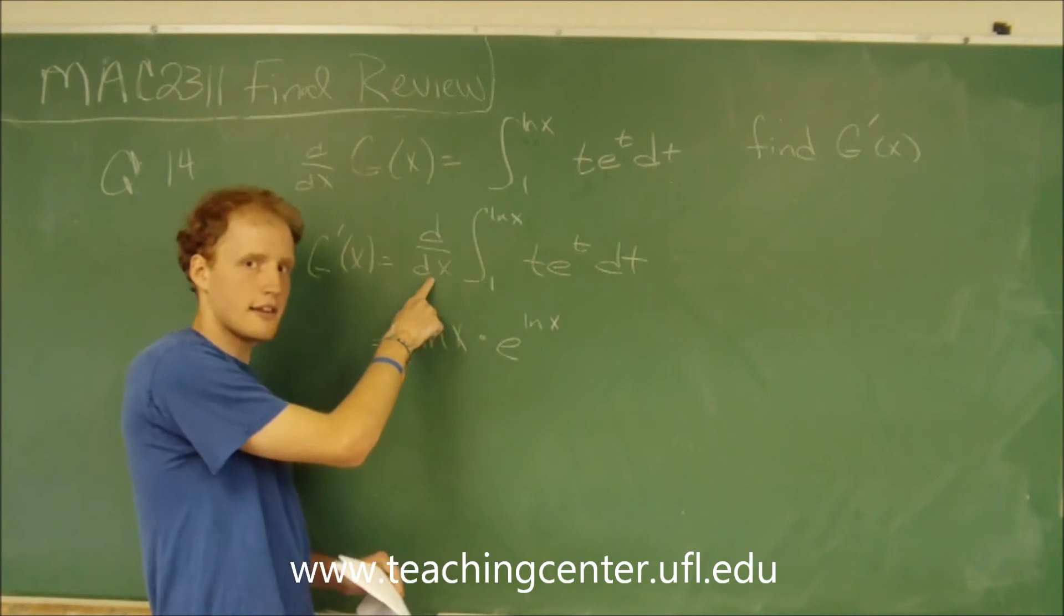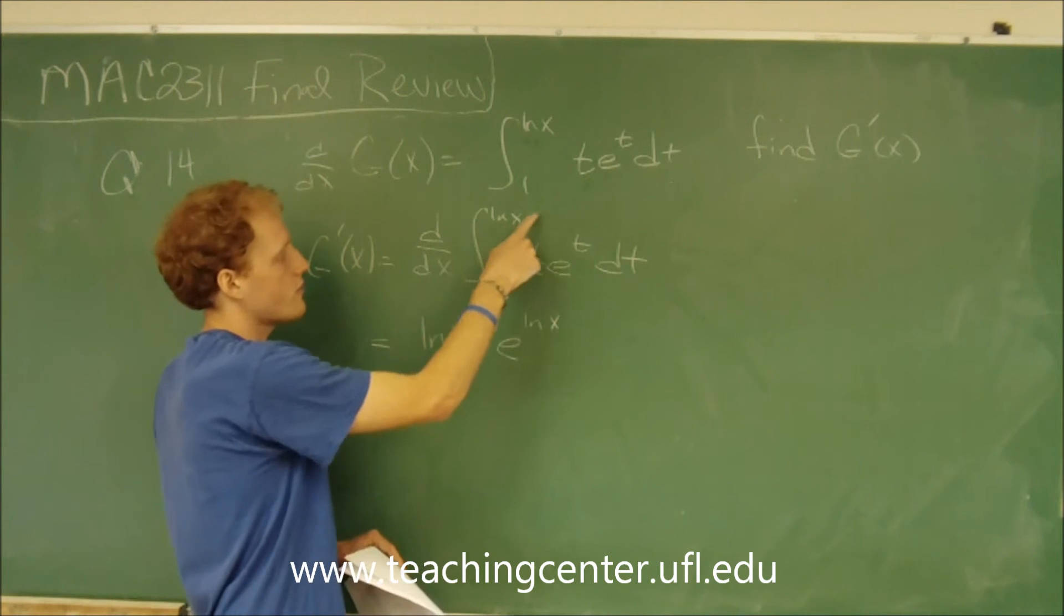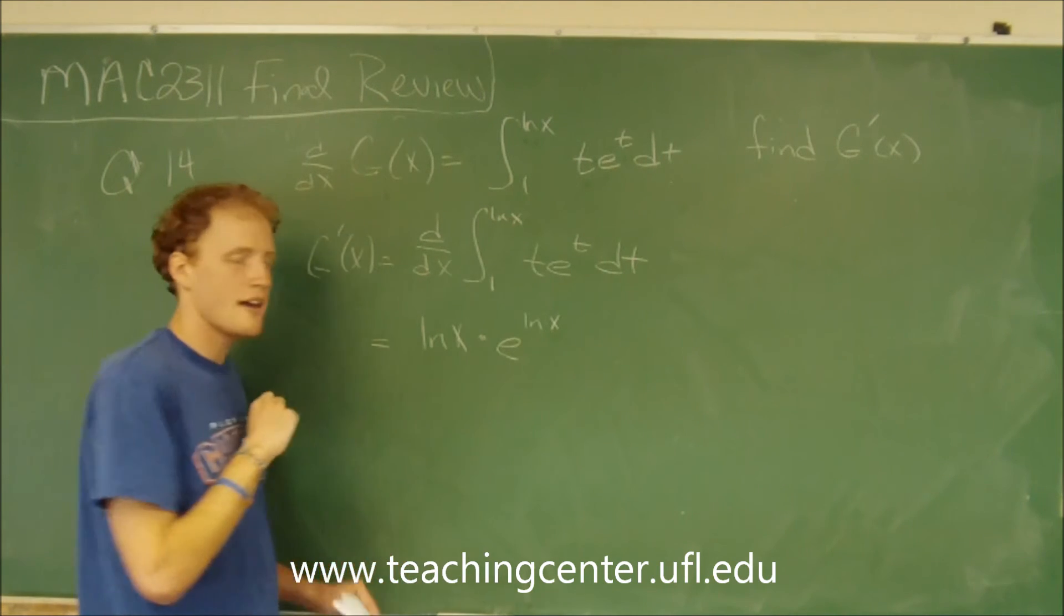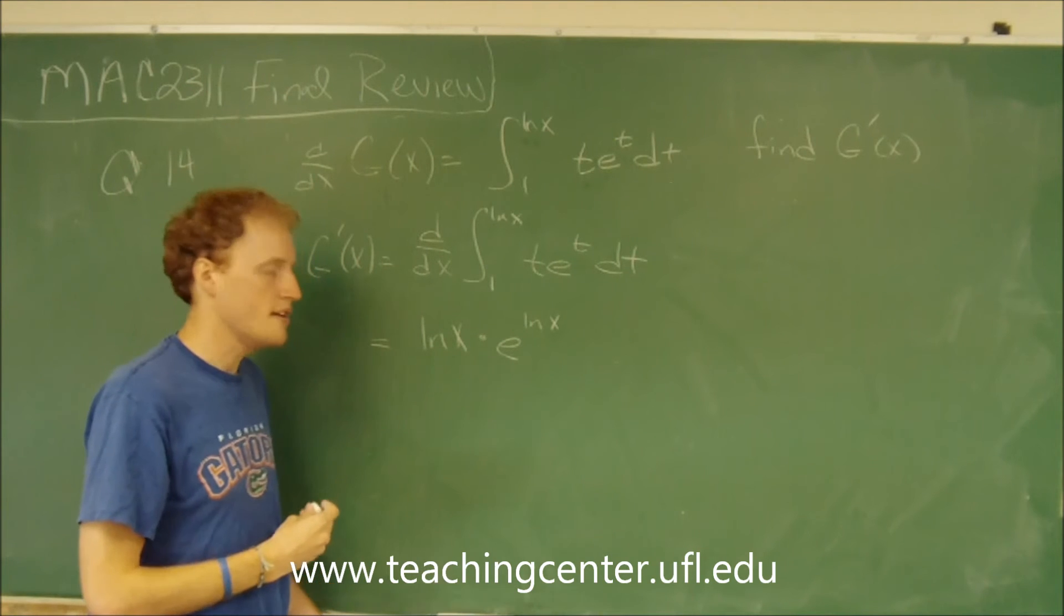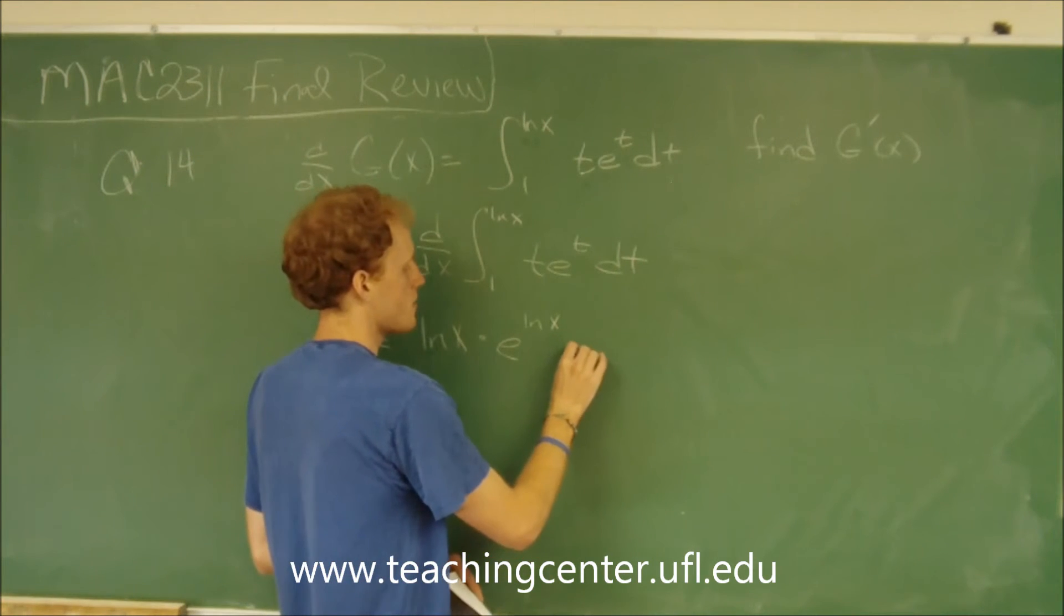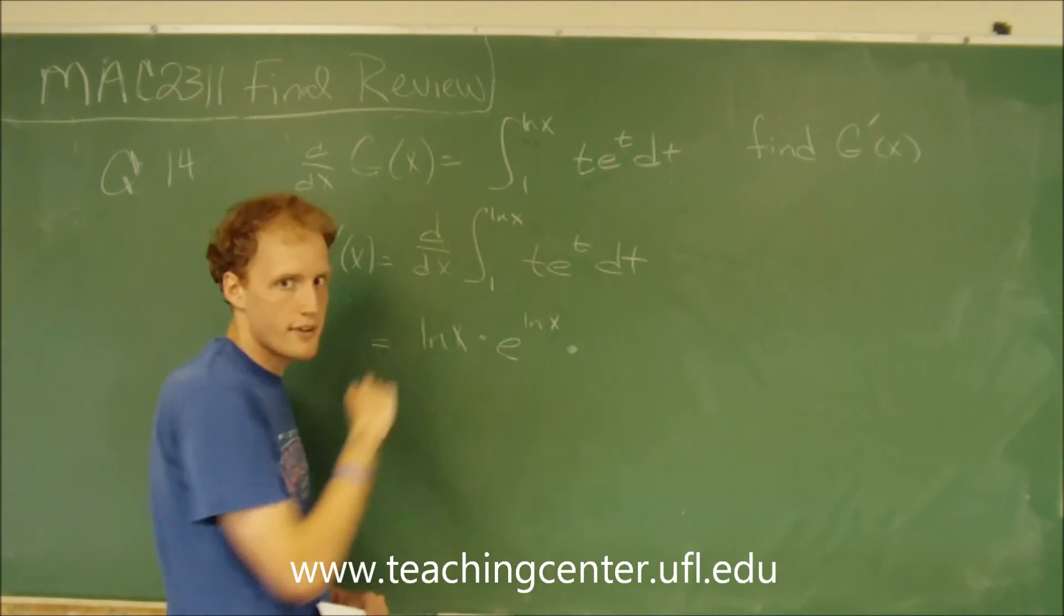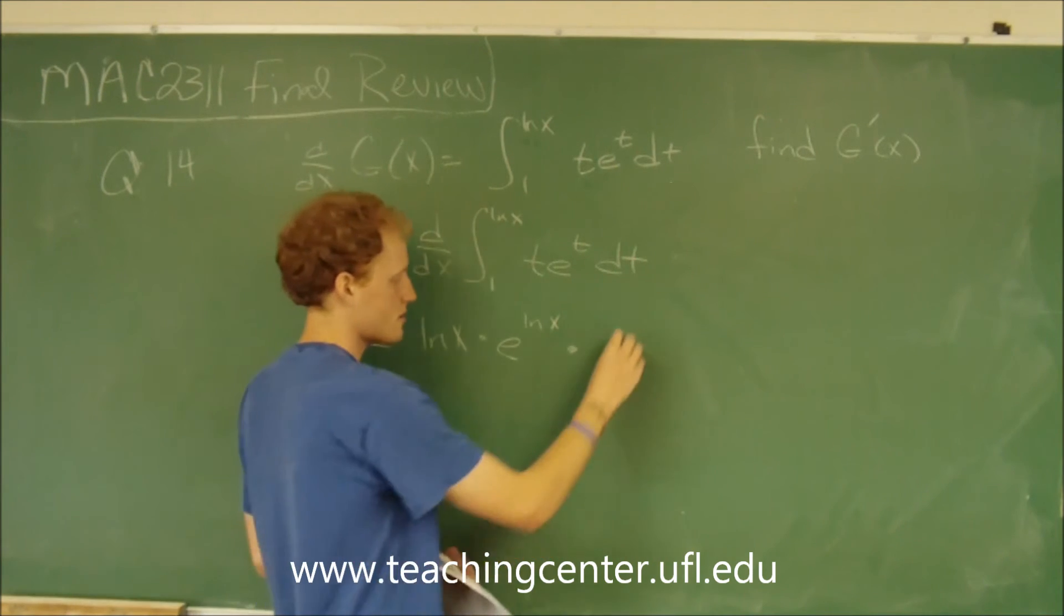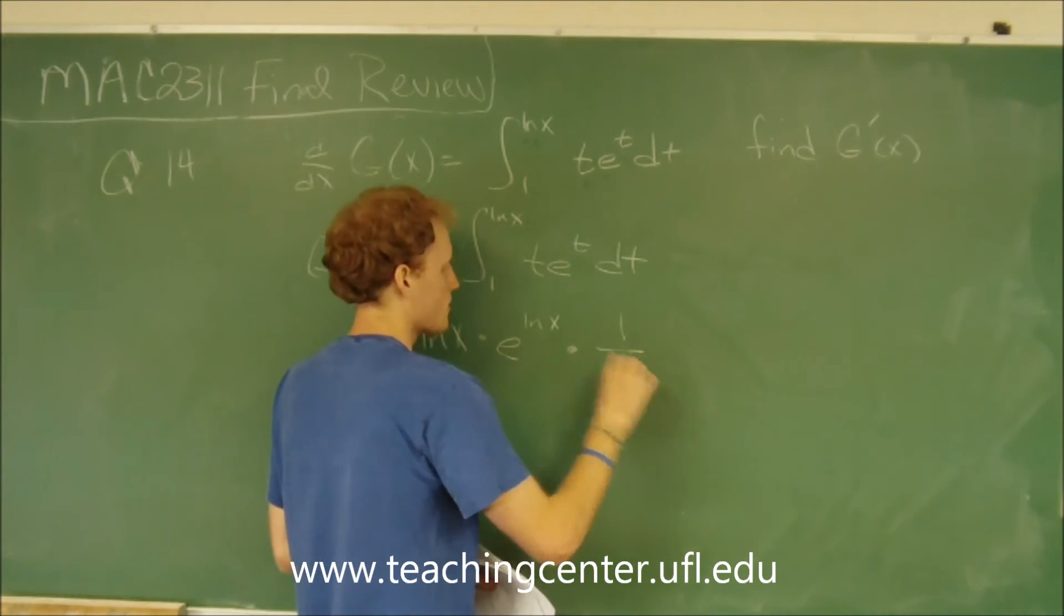But since we're taking the derivative, we have to be careful because this is a function inside of a function, so we need to use the chain rule. It's multiplied by the derivative of the natural log of x, which is 1 over x.